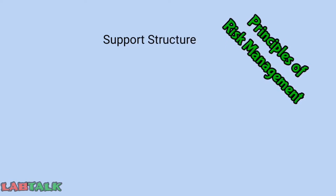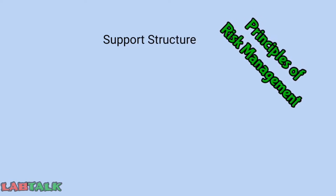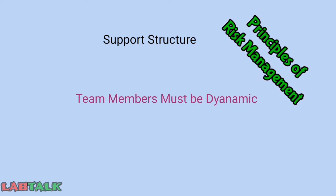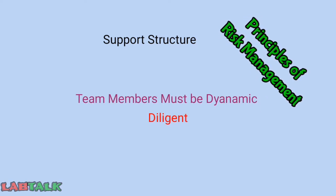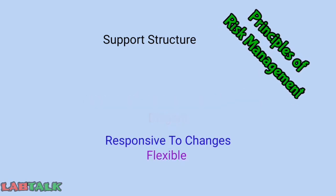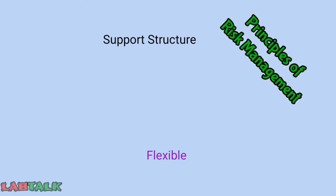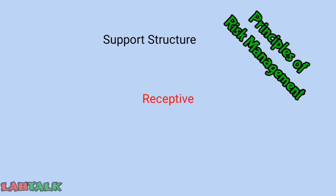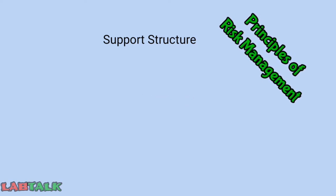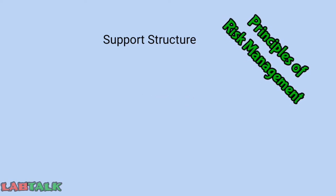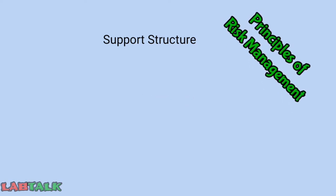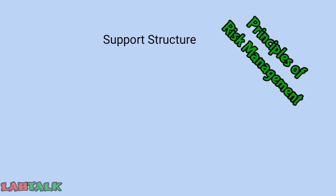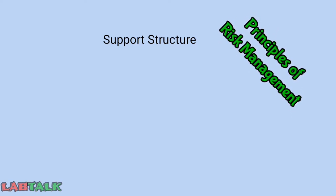The next principle is support structure, which is the most important element in the risk management team. Team members must be dynamic, diligent, and responsive to changes. They should have a flexible and receptive mindset, and be able to respond to changes during the risk management process. Each member should understand their intervention at each stage of the risk management life cycle.